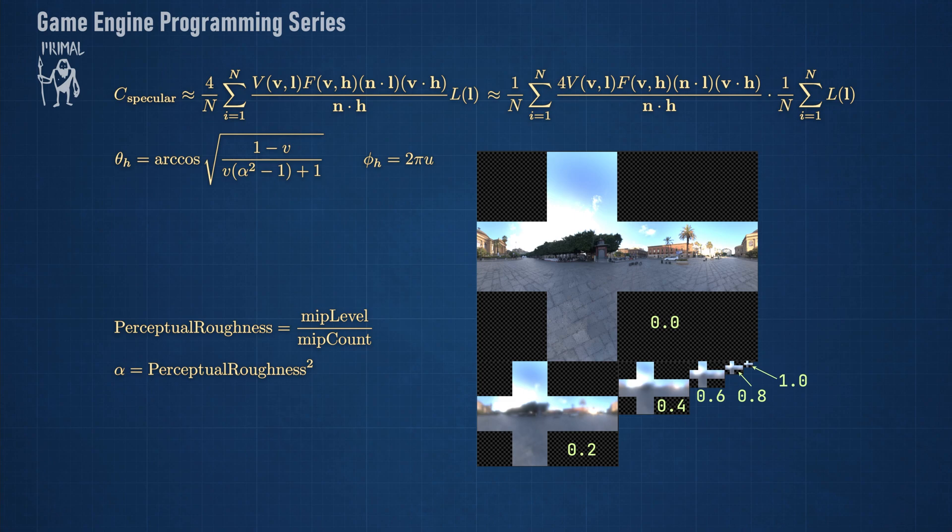Fortunately, this can be done automatically using bilinear sampling, as we'll see in the next episode. Note that we are sampling the source cubemap using a fixed view vector that coincides with the normal direction.